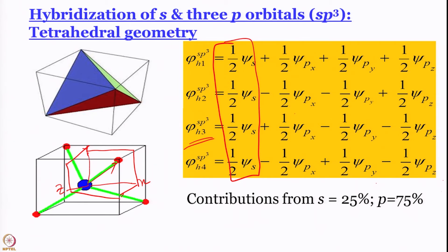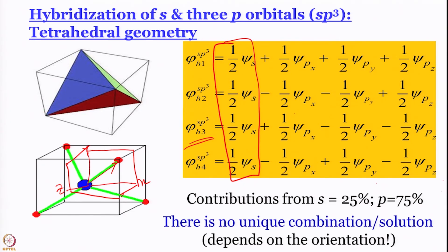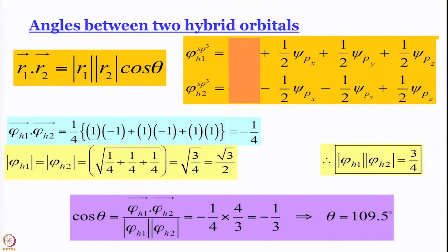We have 25% contribution from s and 75% from p — more importantly, 25% contribution from each of the participating orbitals. There is no unique combination or solution; if you change the orientation the coefficients change. What will not change is the relative contribution and the fact that they must form a complete orthonormal set.